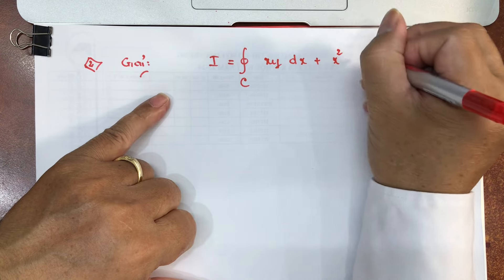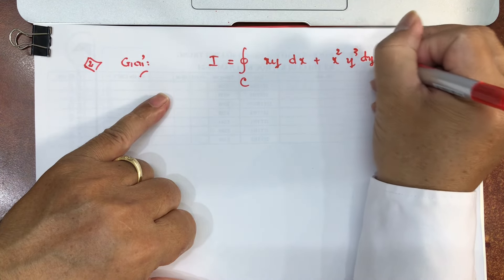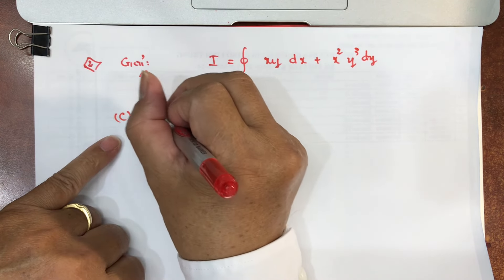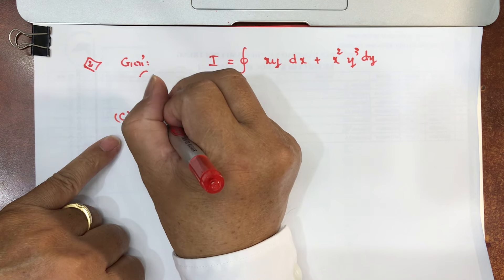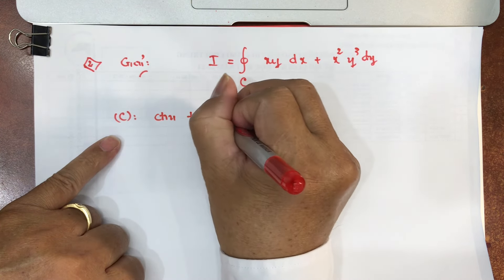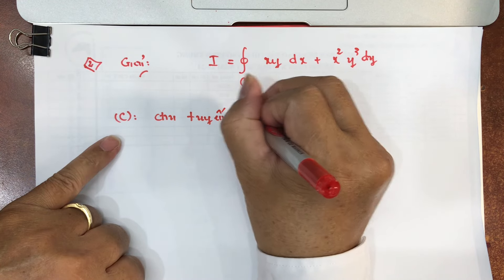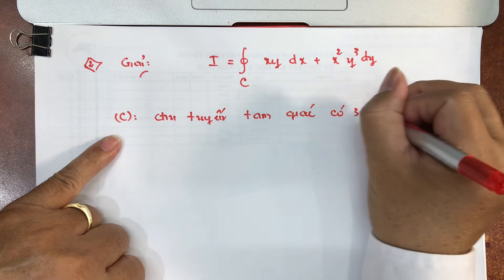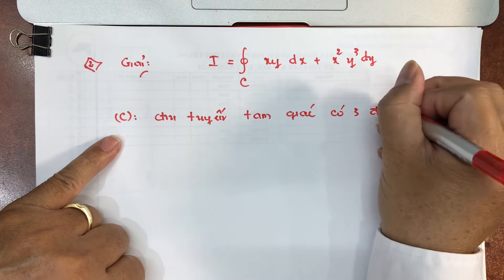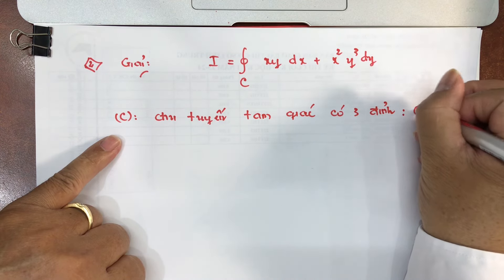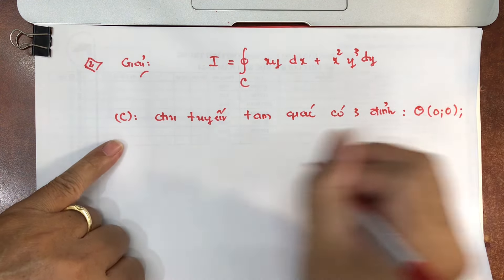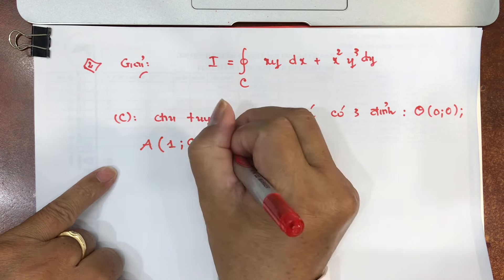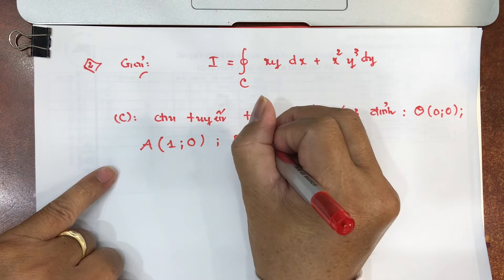Ví dụ 2: Tính tích phân trên đường cong kín C của x·y·dx cộng x²y³·dy. Ở đây C là chu tuyến của tam giác có 3 đỉnh: O(0,0) — gốc tọa độ, A(1,0), và B(1,2).